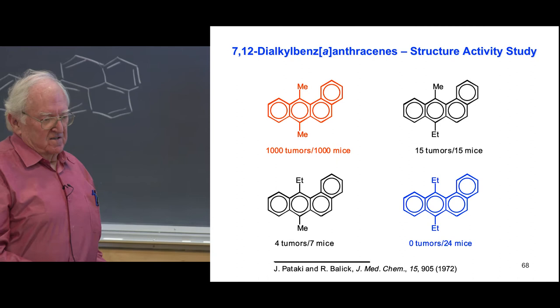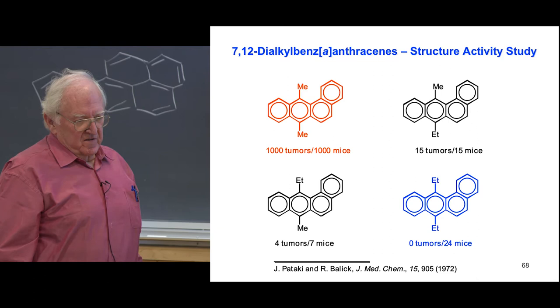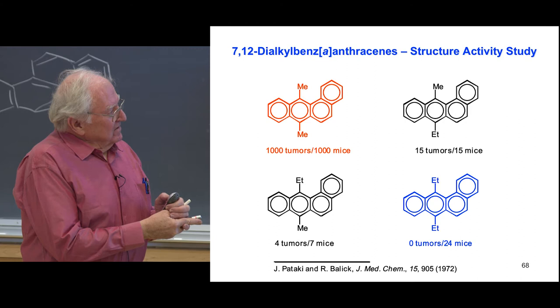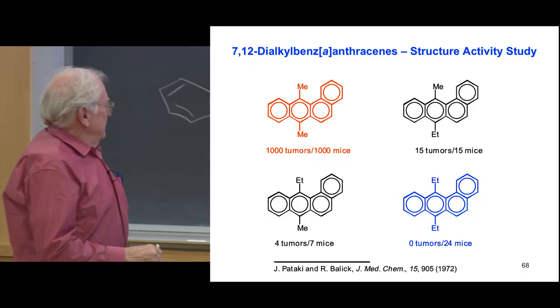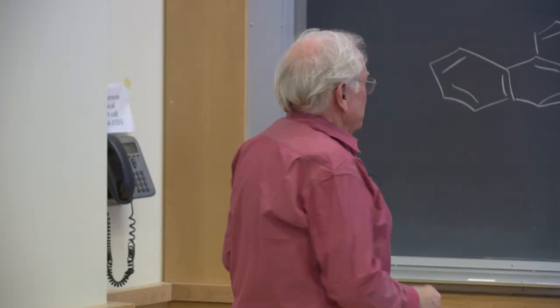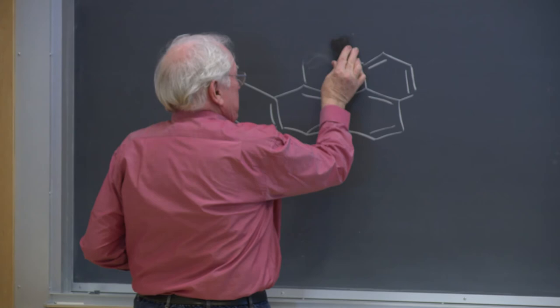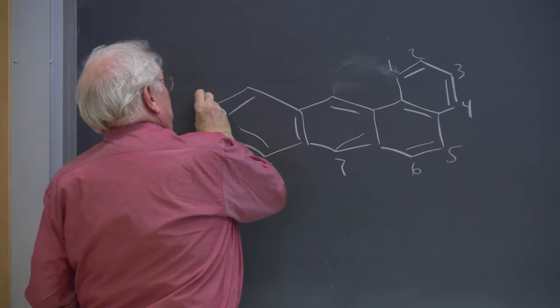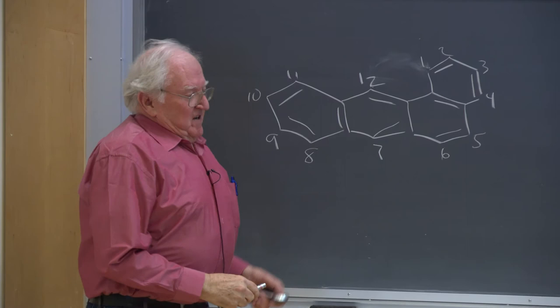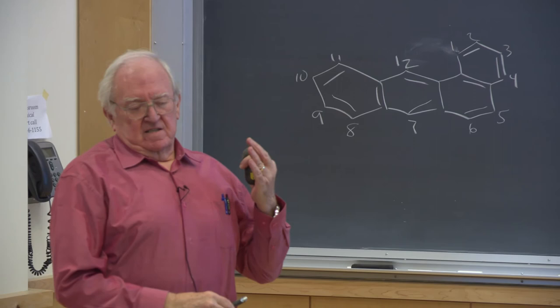The diethyl compound is not a carcinogen — very interesting difference. If you have a mixture, methyl ethyl, then it's sort of in between. Fortunately, 7,12-dimethylbenzanthracene is not produced when you burn things. The numbering begins here, goes around the ring, skipping positions that can't have a substituent. It operates by a different mechanism, but fortunately it's not produced as far as we can tell when you burn things.